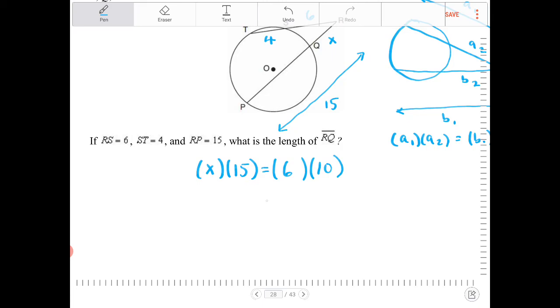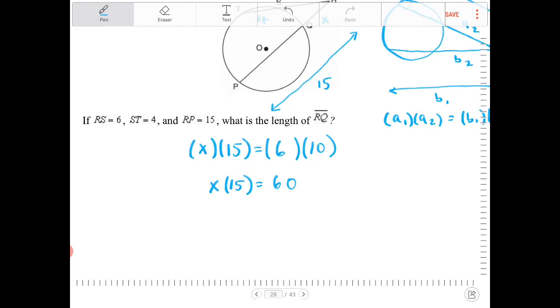I'm going to multiply by 6, so I get 60. So X times 15 is equal to 60. Divide both sides by 15. 60 over 15, well that's just 4. So RQ, therefore, will have a length of 4 units.